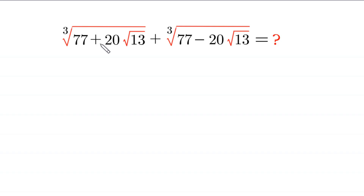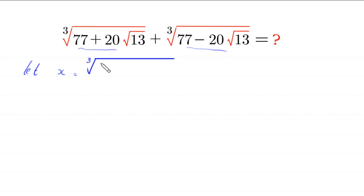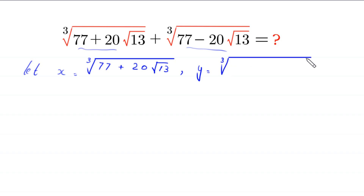First, we suppose that the first expression is equal to x and the second is equal to y. So x is equal to cube root of 77 plus 20 times root 13, and y is equal to cube root of 77 minus 20 times root 13.